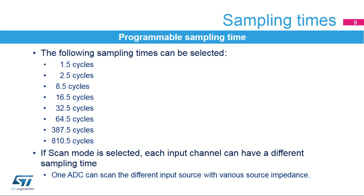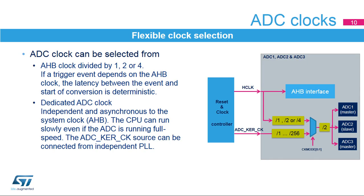The sampling time can be programmed individually for each input channel. The sampling times listed in this slide in ADC clock cycles are available. Longer sample times ensure that signals with higher impedance are correctly converted. The ADC has a selectable clock source. When the system needs to run synchronously, the AHB clock source is the best selection. If a slow CPU speed is required but the ADC needs a higher sampling rate, the dedicated ADC-KERCK source can be selected from the independent PLL.